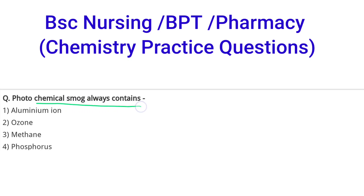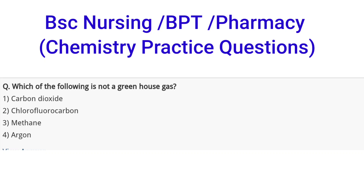Next question: photochemical smog always contains — options are aluminum, ozone, methane, or phosphorus. The correct option is B, that is ozone. Next question: which of the following is not a greenhouse gas? Options are carbon dioxide, chlorofluorocarbon, methane, and argon. The correct option is D, that is argon — argon is not a greenhouse gas.